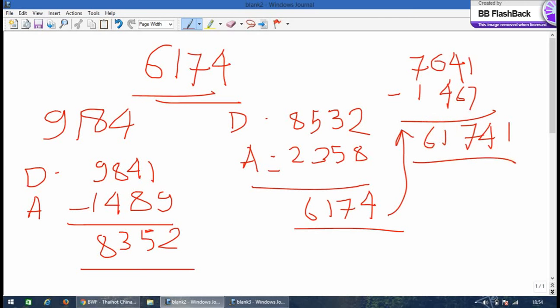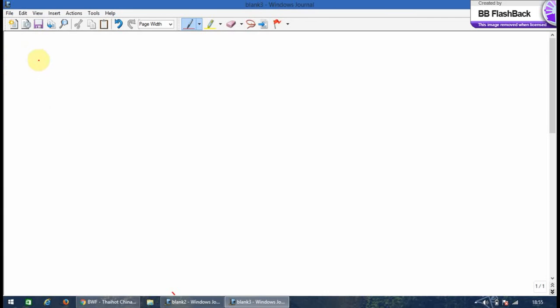So this was the special thing, that is you start with any four-digit number, you're finally gonna land up with the same number, that is 6174. So this is the speciality about this number. So if you're not satisfied with the explanation, let's do it with one more number.